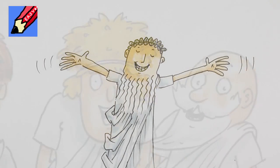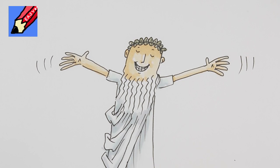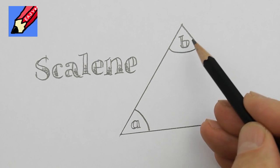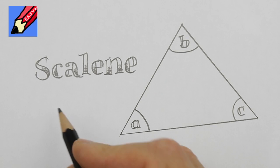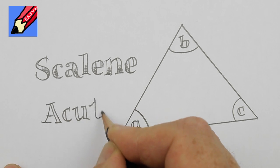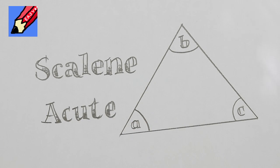There are three different types of scalene triangle. If all the angles in the triangle are acute, that is, they are all smaller than 90 degrees, then it's called an acute triangle.